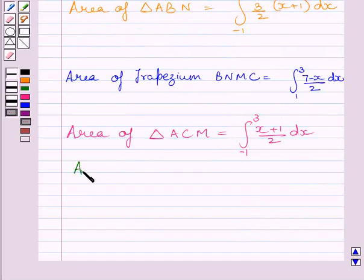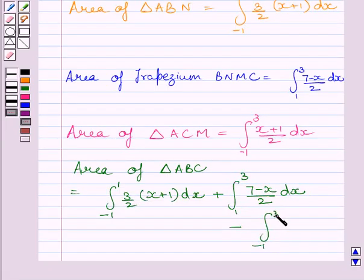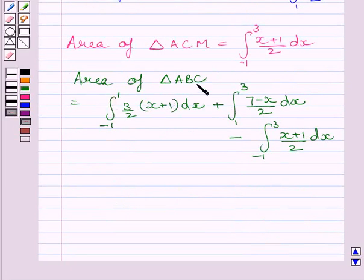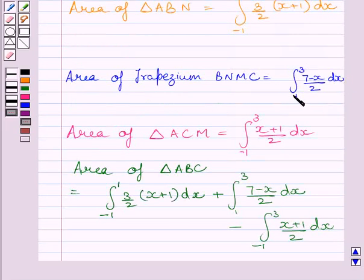The area of triangle ABC equals the definite integral from minus 1 to 1 of (3/2)(X + 1) dx, plus the definite integral from 1 to 3 of (7 minus X)/2 dx, minus the definite integral from minus 1 to 3 of (X + 1)/2 dx.